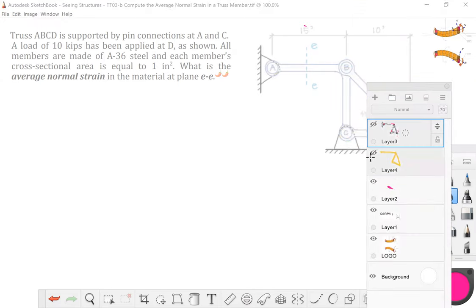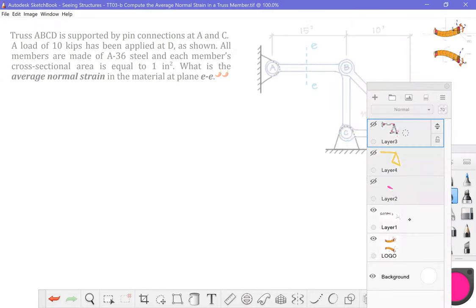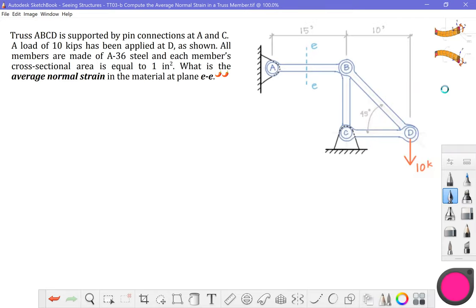All right, let's just turn these off. Get them out of here. Put that one back up. New layer. Good. Okay. All right, back to business. So we've got this truss. The load has been applied here. It's equal to 10 kips or 10 kilopounds, 10,000 pounds.